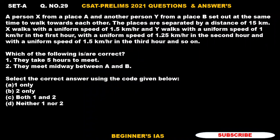Hello, my dear aspirants, welcome. Let us discuss question number 29. Person X from place A and another person Y from place B set out at the same time walking towards each other. The places are separated by a distance of 15 kilometers. X walks with a uniform speed of 1.5 km per hour, and Y walks with a uniform speed of 1 km per hour in the first hour, 1.25 km per hour in the second hour, and 1.5 km per hour in the third hour, and so on.